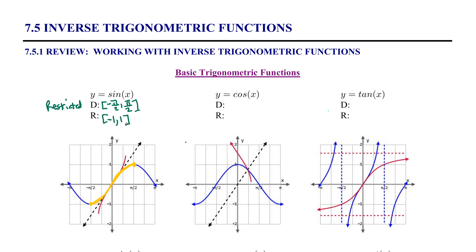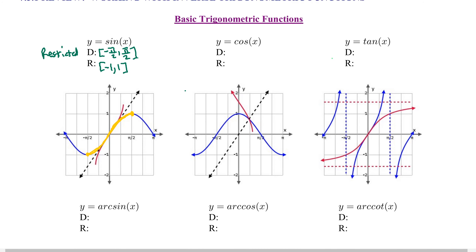If we take that yellow curve and reflect it across the line y equals x, shown as a dotted black line, the resulting graph is the graph of the inverse function. We can call it arc sine of x, or equivalently inverse sine of x. The domain and range from ordinary sine reverse for inverse or arc sine.